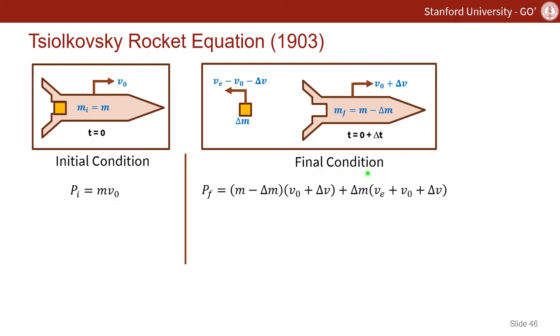If we go to final condition, the final mass is M minus delta M, where delta M is equivalent to the mass of the propellant that's been expelled. If we look at the final momentum, we need to actually equate or account for the propellant that's been expelled.